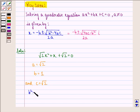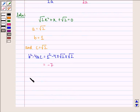We can say that b² - 4ac becomes 1² - 4·√2·√2, which equals -7. From the key idea, we see that x becomes equal to (-1 ± √(-7)) / 2√2.